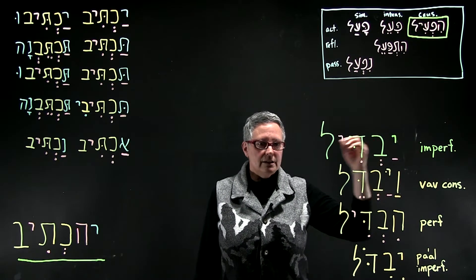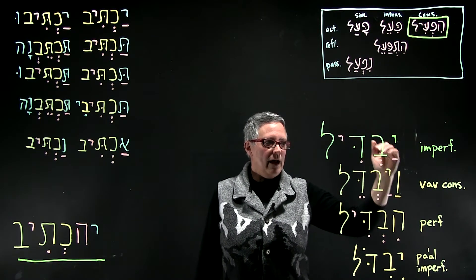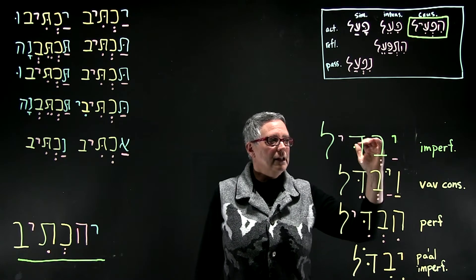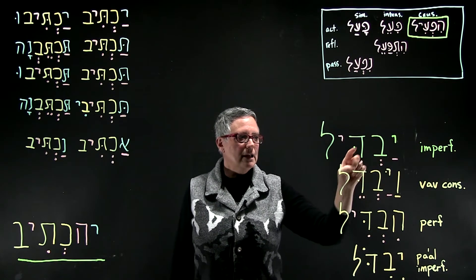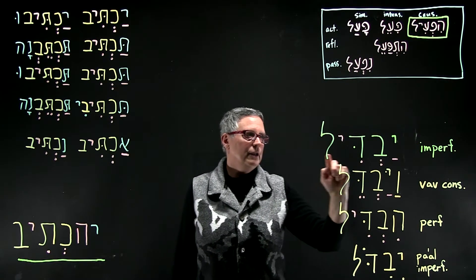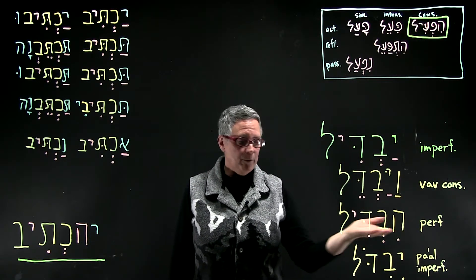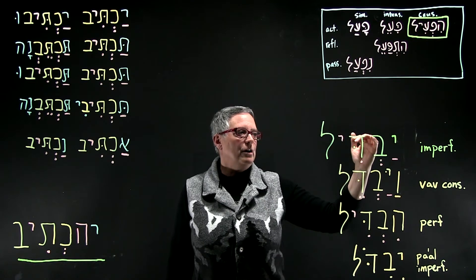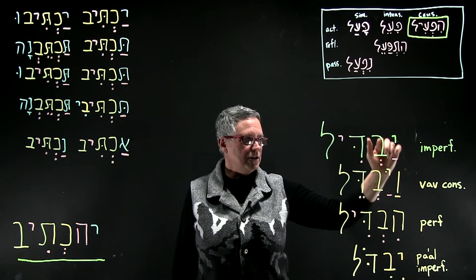You'll notice that there are some distinct visual signs that will help you to recognize that this imperfect word is in the Hi-feel stem. They are the patach under the prefix, and the hiriq yod — or tsere — between the second and third root letter. You do not get to see the he from the Hi-feel like you see it in the perfect form, but you still see the hiriq yod. The real determiner to help you figure out that this is a Hi-feel is the patach under the prefix.